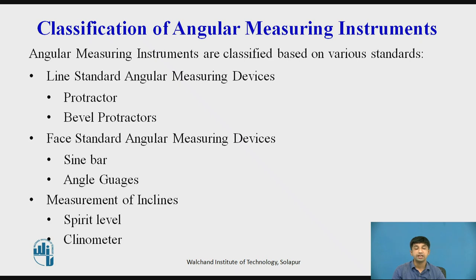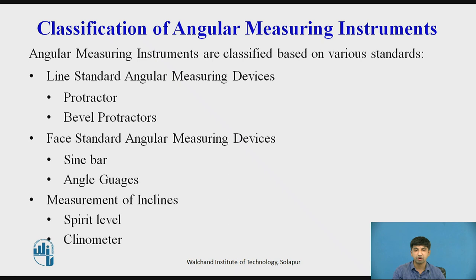Measurement of Inclines. Inclination of a surface generally represents its deviation from the horizontal or vertical planes. The gravitational principle can be used in construction of measurements of such inclinations. Spirit levels and clinometers are included in this category of measurement of inclines.